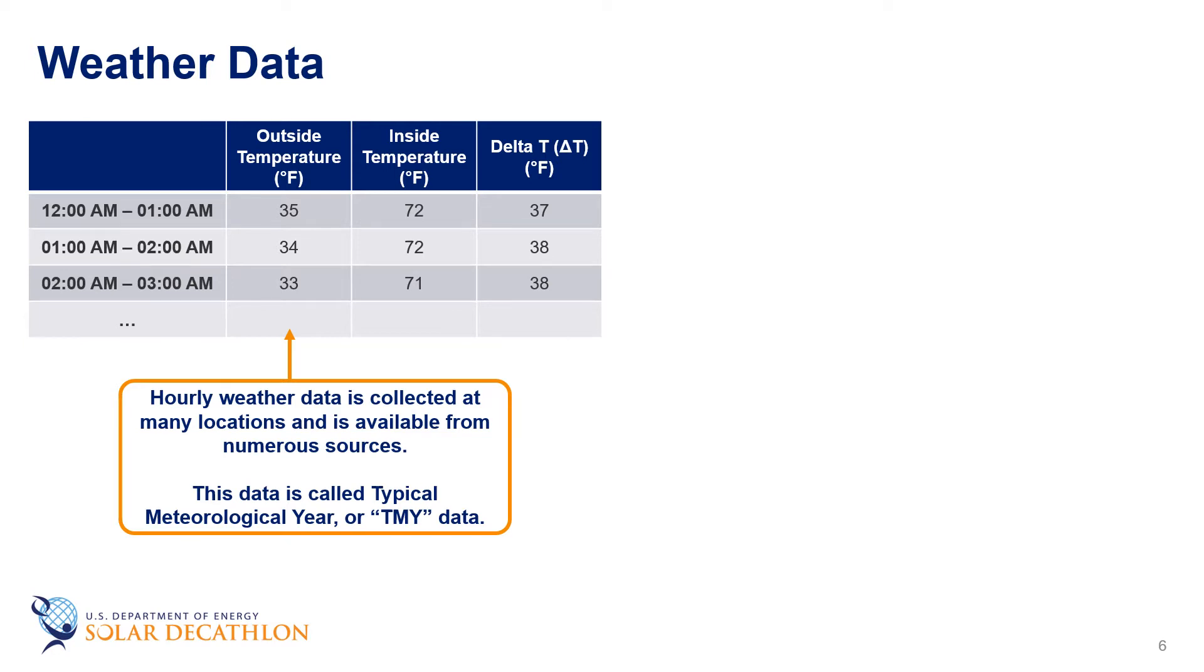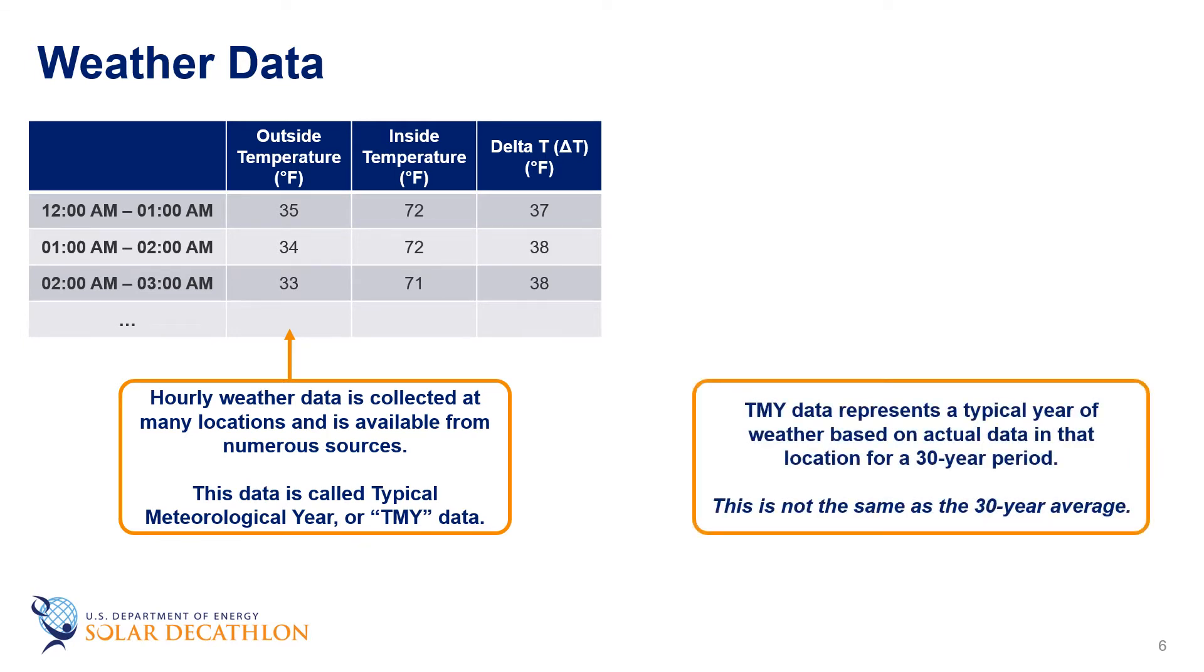These data sets have been updated with the latest TMY version 3 or TMY3. This data set represents a typical year weather based on actual data for a 30-year period. Note that this is different than a 30-year average.